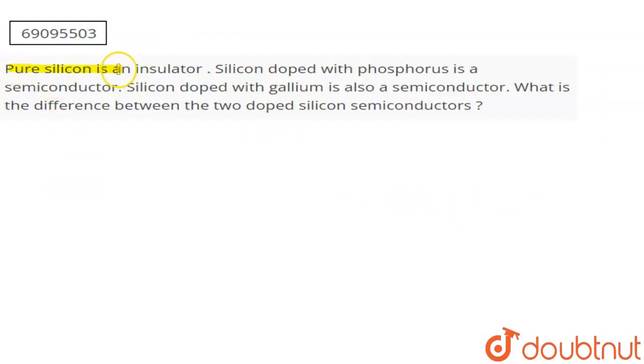The question is: pure silicon is an insulator. Silicon doped with phosphorus is a semiconductor. Silicon doped with gallium is also a semiconductor. So what is the difference between the two doped silicon semiconductors?